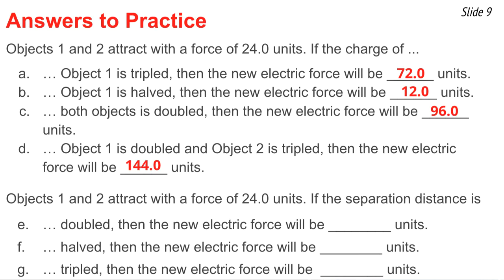Questions E, F, and G have to do with the force-distance relationship. The answer to E is 6 units, because if you were to double the distance, you would make the force one-fourth of the original value: take 24 and divide by 2 squared. In F, you're making the distance smaller, so you make the force bigger. If the distance becomes one-half of its original value, the force becomes 2 squared times its original value: 24 times 2 squared is 96.